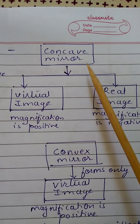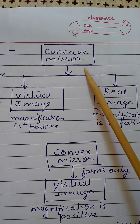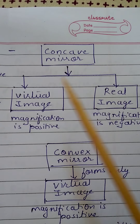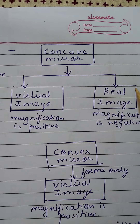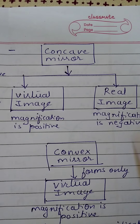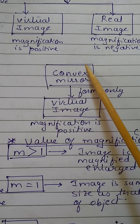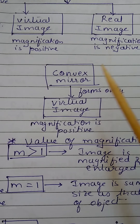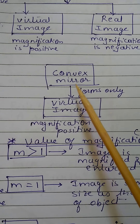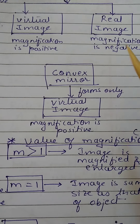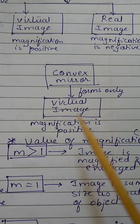For a concave mirror, images can be virtual as well as real. A concave mirror can form two types of images — virtual as well as real. When a virtual image is formed, magnification is positive; when a real image is formed, magnification is negative. For a convex mirror, the image is always formed as a virtual image because it is formed behind the mirror, so its magnification is always positive.